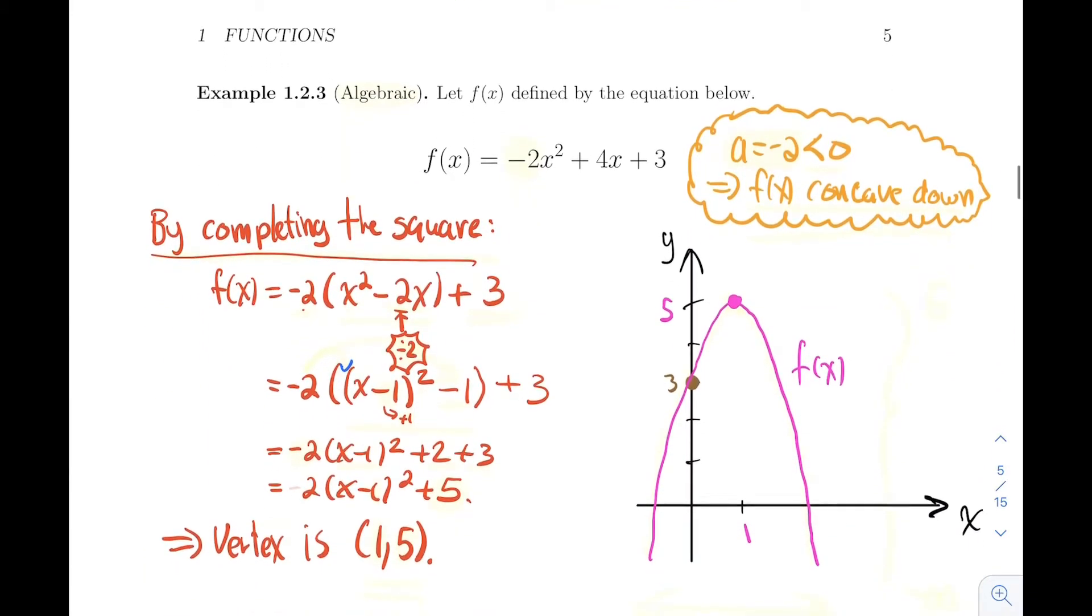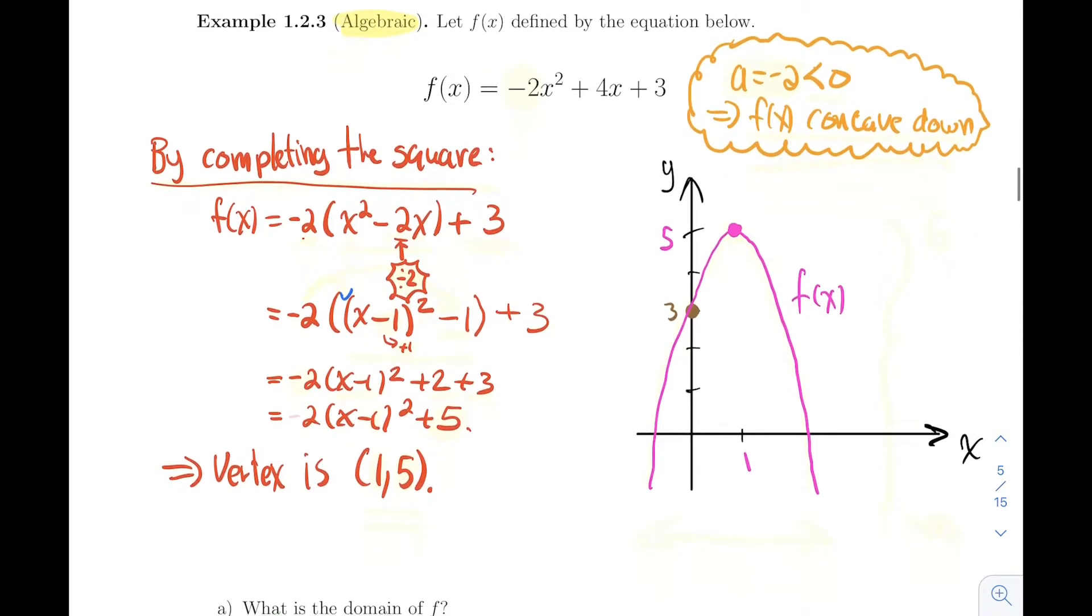Next one, an example of a function defined by an equation - an algebraic example. We have f(x) = -2x² + 4x + 3, so this is a good old quadratic equation. When you have a quadratic equation and you're studying the domain and range, the first thing you look at is the a value. Here the a value is minus 2, it is strictly less than 0, and because it is strictly less than 0, I know my function is going to be concave down. This means my range will go down to minus infinity, but we're going to have a maximum.